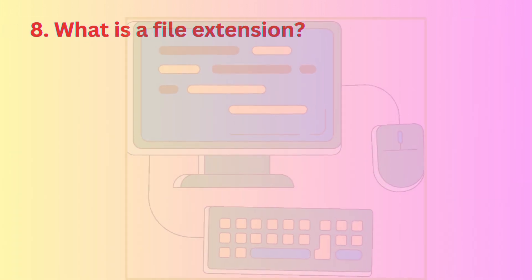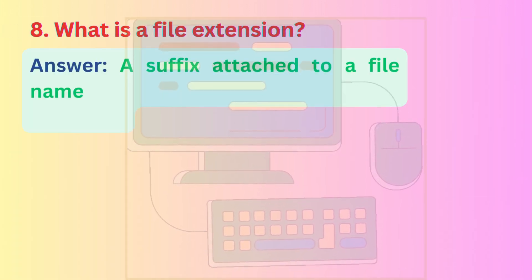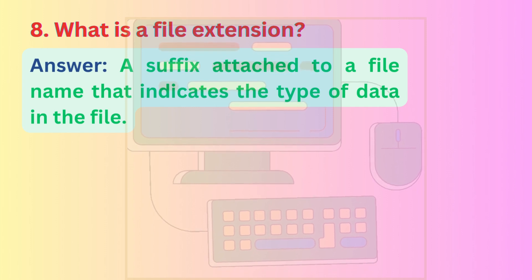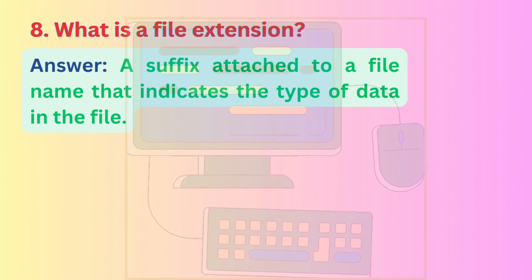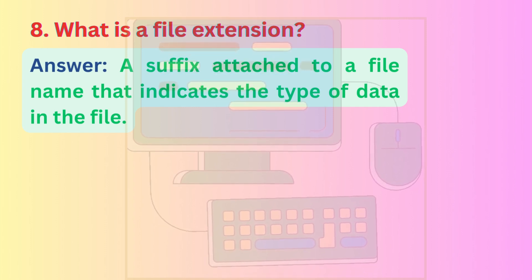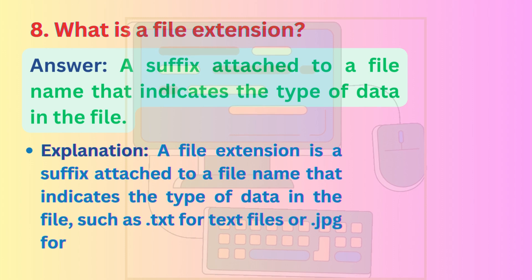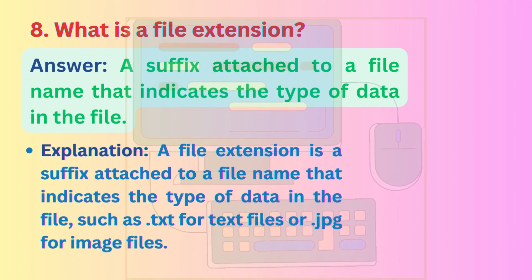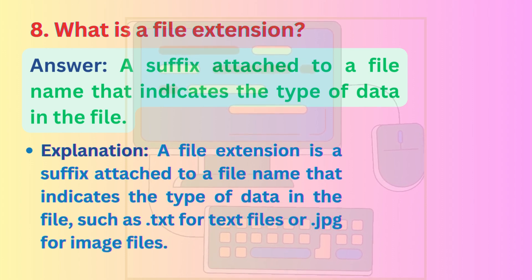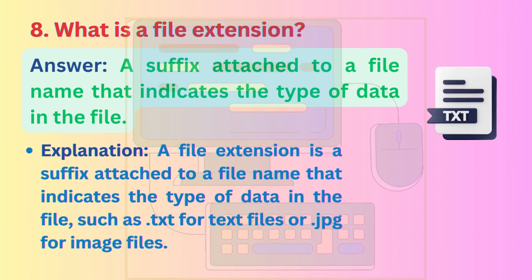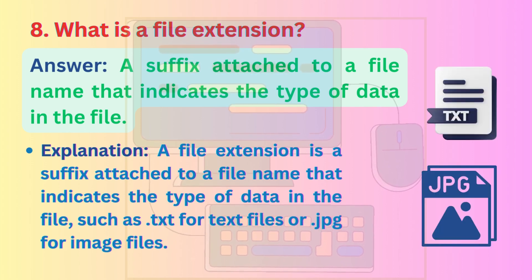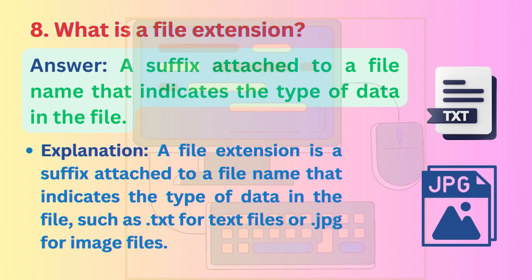Question 8: What is a file extension? Answer: A suffix attached to a file name that indicates the type of data in the file. Explanation: A file extension is a suffix attached to a file name that indicates the type of data in the file, such as .txt for text files or .jpg for image files.